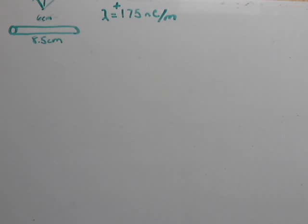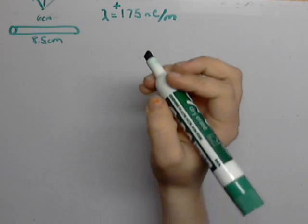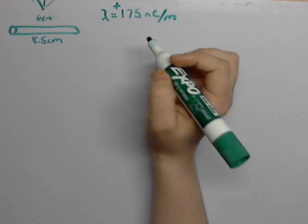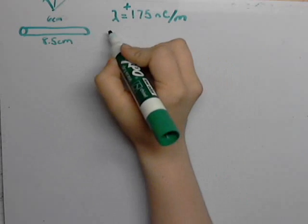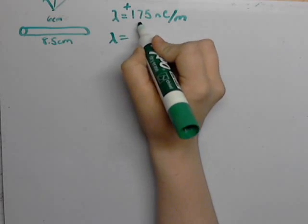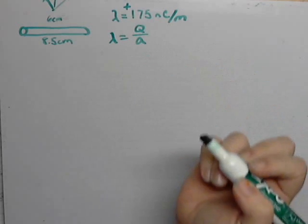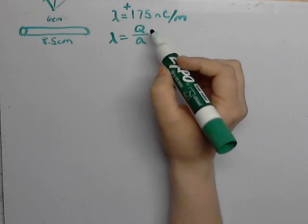First thing that I'd like to do is figure out what the charge is, the total charge is for the wire. So in order to do that we need to calculate it from the density. We know that lambda equals the total charge divided by the total length.